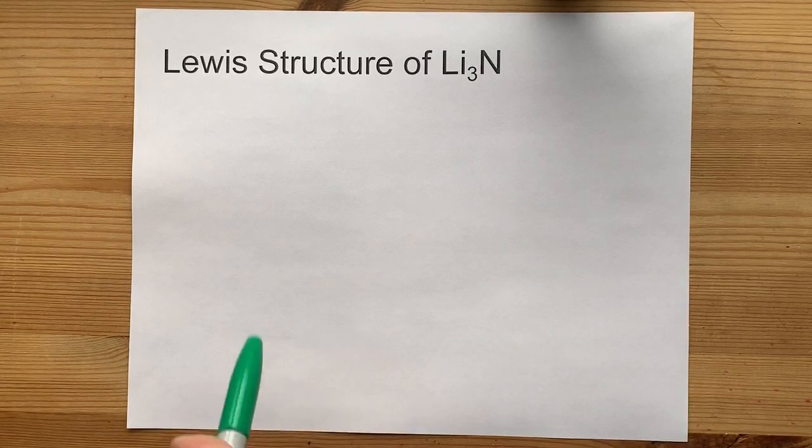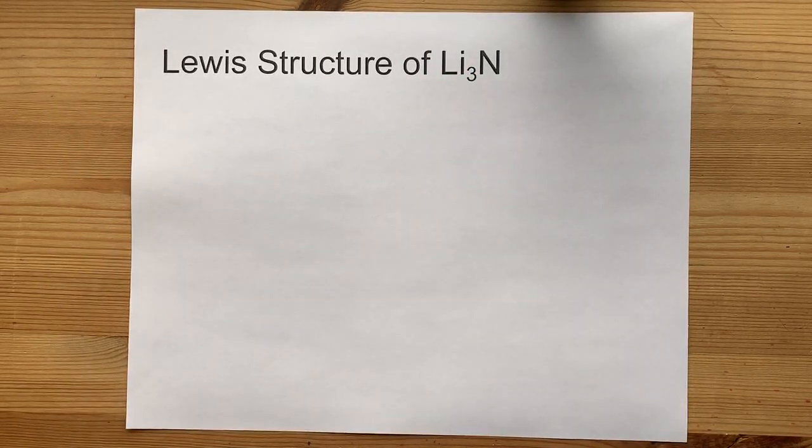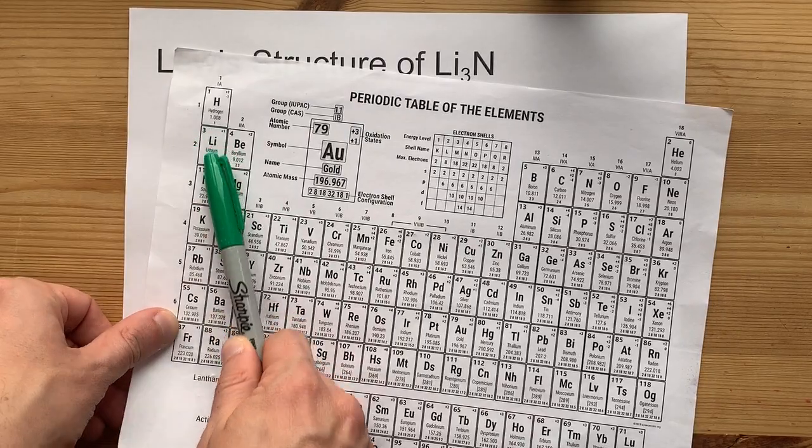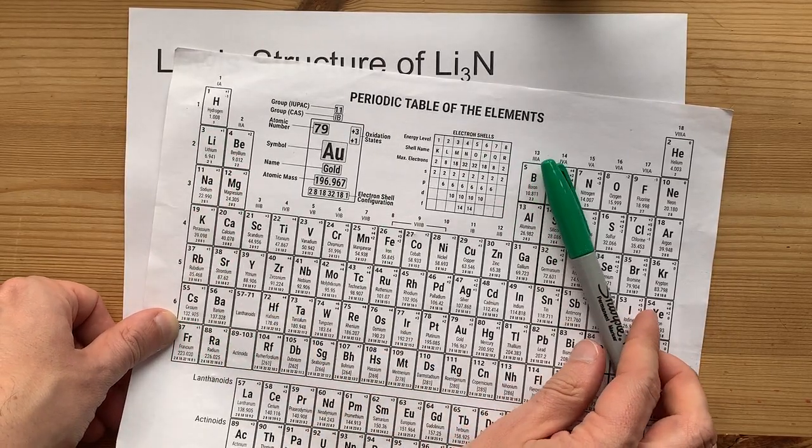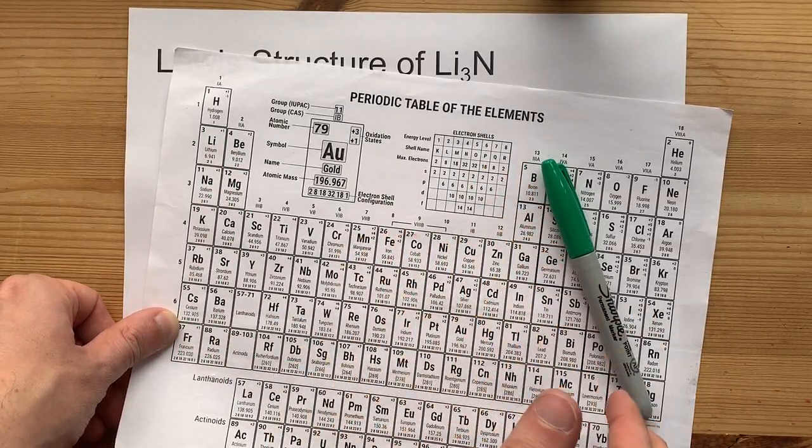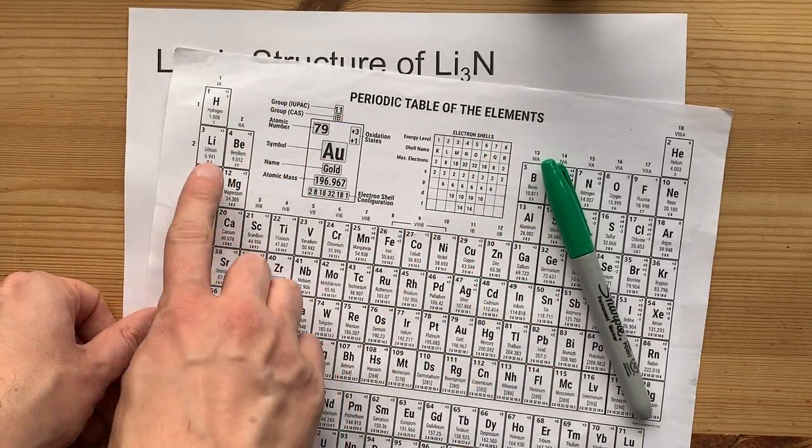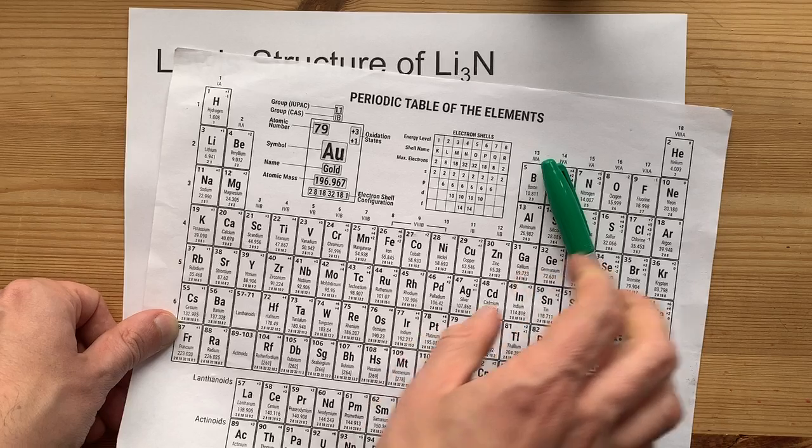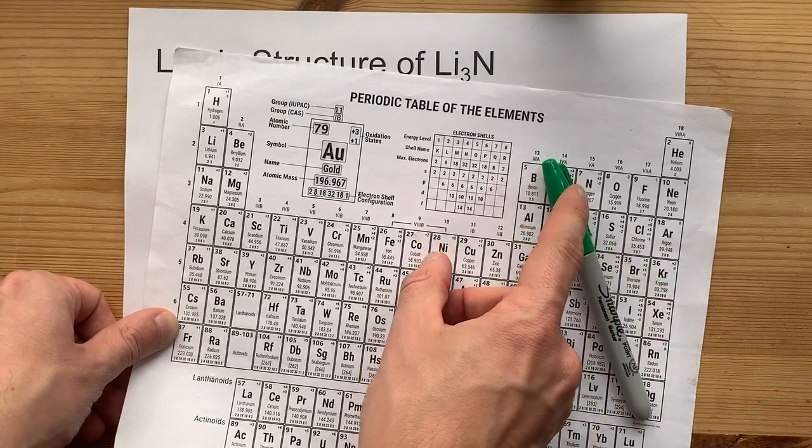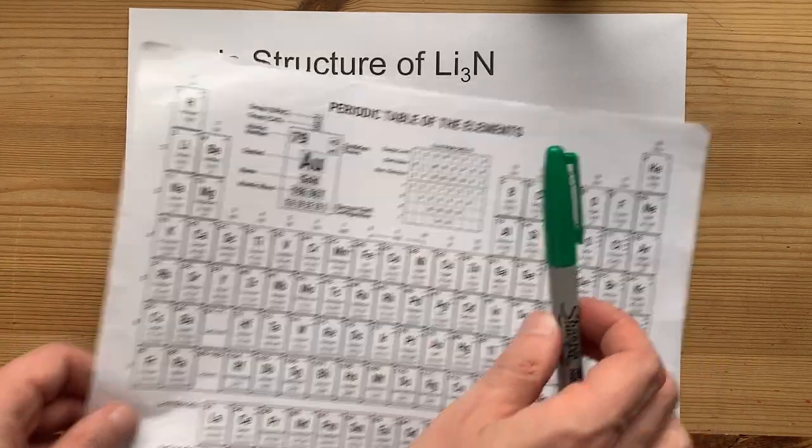Together, let's draw the Lewis structure of lithium nitride. Lithium is an alkali metal. Remember, anything to the left of the staircase of metalloids is usually a metal. Hydrogen is the only exception. Lithium is definitely a metal. And nitrogen is to the right of the staircase. It is a non-metal.